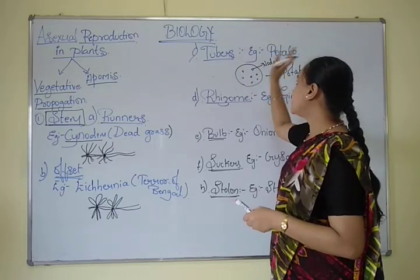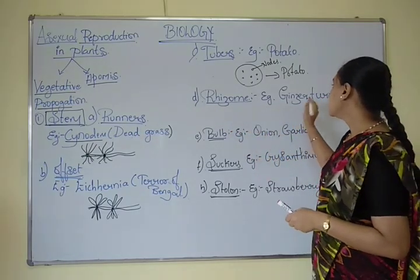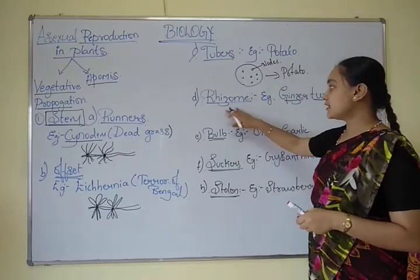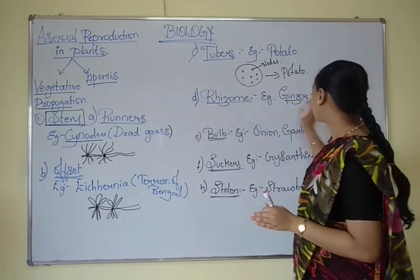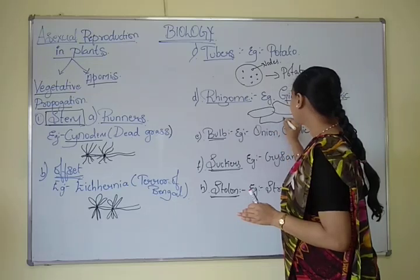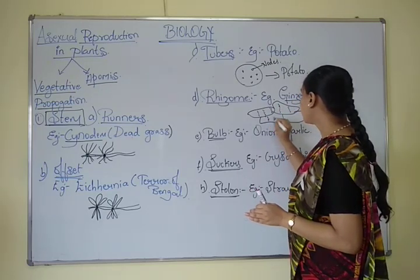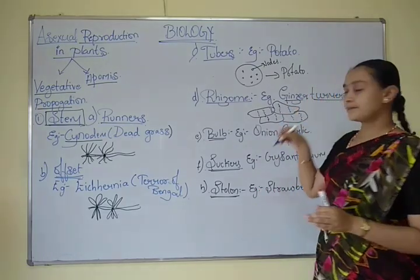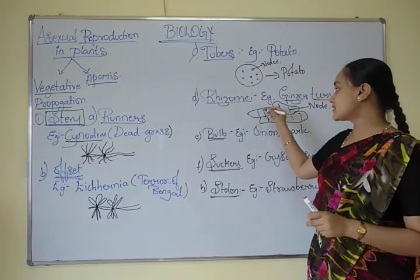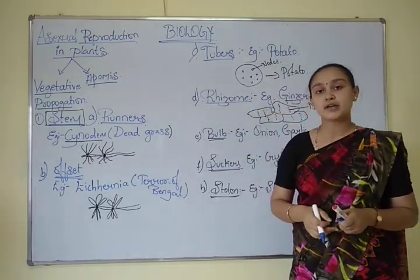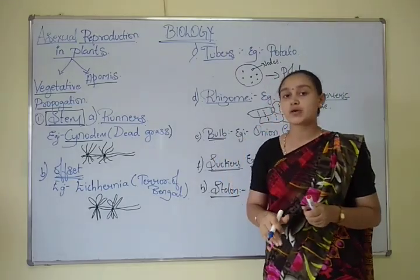Next is the rhizome, where the stem grows underground — inside the soil. The example is ginger. On the ginger we can see certain lines, which are the nodal regions of the stem. When this nodal region comes into contact with the soil, it develops into a new plant. It is called a rhizome because the stem grows inside the soil.